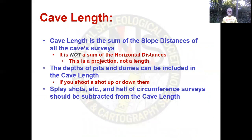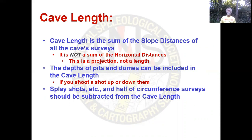Cave length is the sum of the slope distances of all the cave surveys. It is not a sum of the horizontal distances, as horizontal distance is a projection, not a length. The depths of pits and the heights of domes can be included in the cave length if you shoot up or down them. Even if you can't access the bottom of the pit or the top of the dome, you can shoot up and down them using a disto or trigonometry. Display shots, radial surveys, side shots, surface surveys, redundant surveys, and half-circumference surveys should not be included in the cave length.